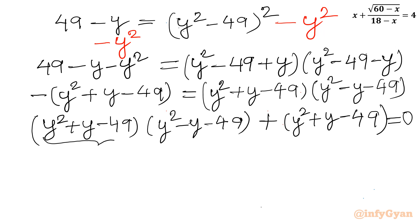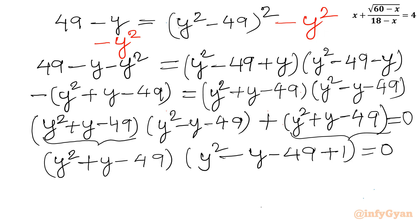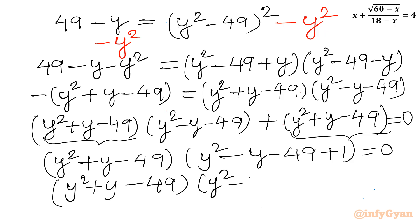The factor (y squared plus y minus 49) is common. Taking all terms to the right-hand side and factoring, we get: (y squared plus y minus 49)(y squared minus y minus 48) equal to 0.